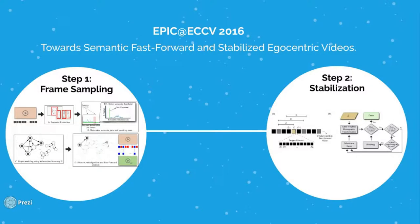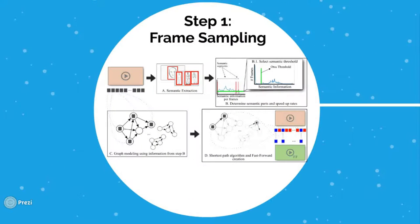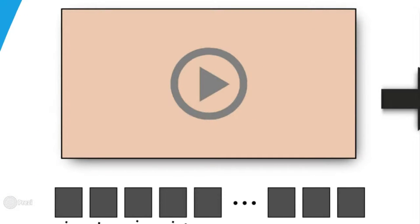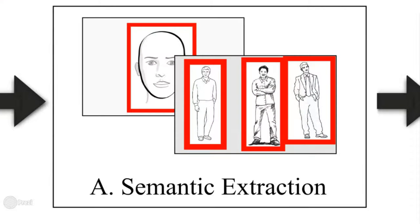Two main steps describe our methodology. In the first step, we perform an adaptive frame sampling. We first process the input video frame by frame, extracting the semantic information present in each one. To do so, we use a detector confidence along with the ROI area and centrality.